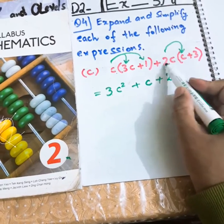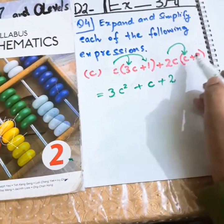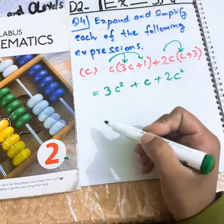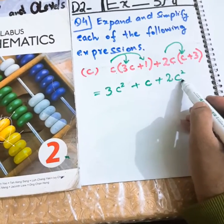Here, 2 will be multiplied by this invisible 1. 2, 1 times 2. 2, 1 times 2. 1 is invisible. C, C times C squared.